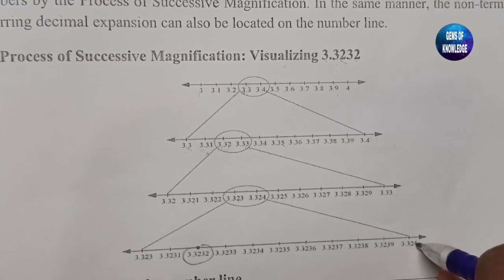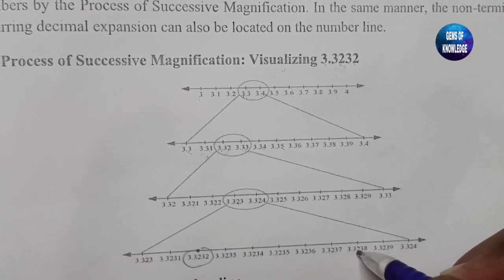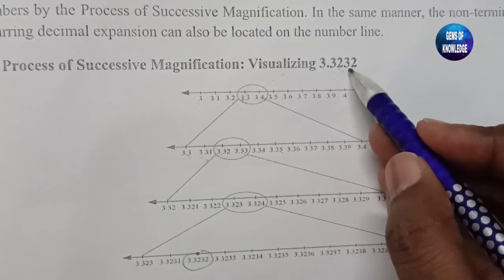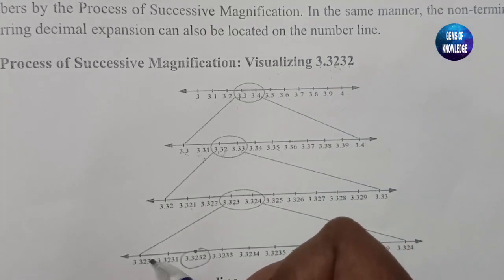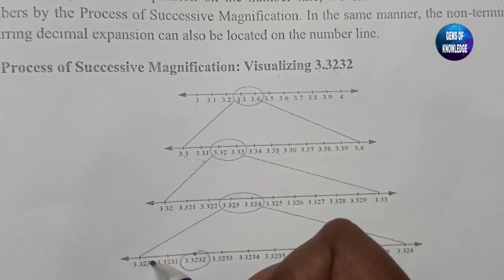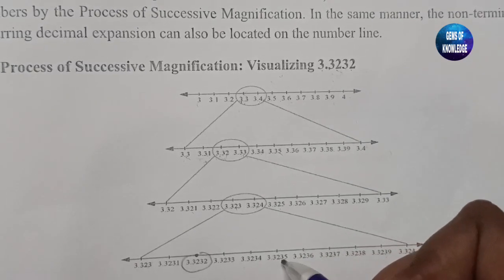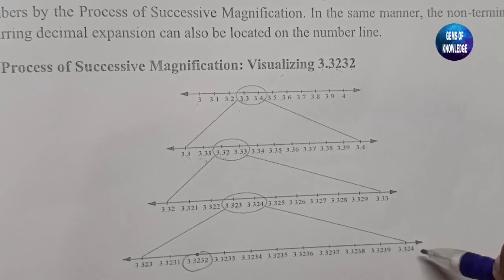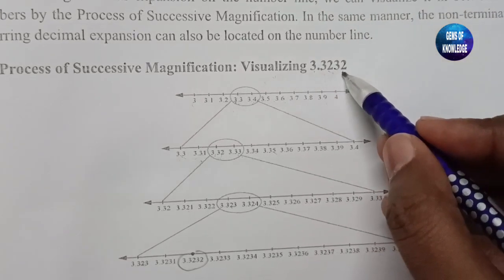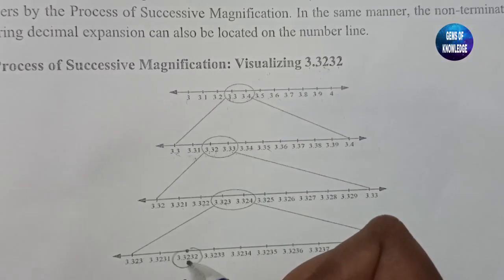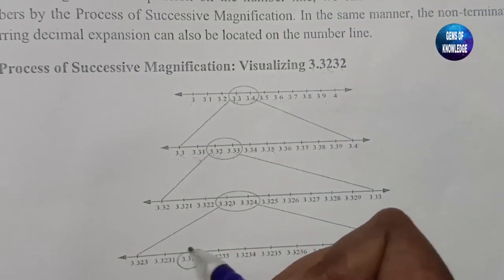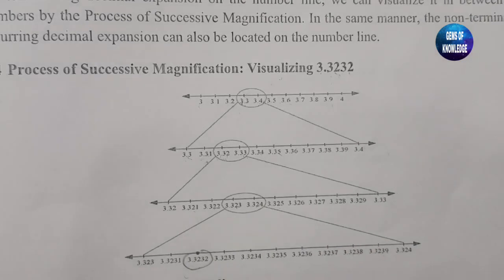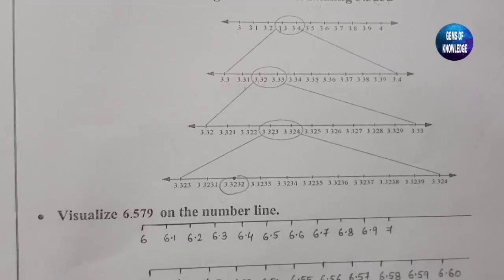The section expands further showing 3.3230, 3.3231, 3.3232, 3.3233, 3.3234, 3.3235, 3.3236, 3.3237, 3.3238, 3.3239, and 3.3240. The number given to us was 3.3232, so we have found it and we circle this number. That's all for this example.